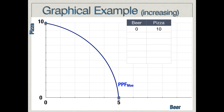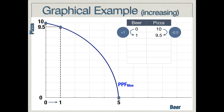Now to contrast this, let's take a look at a PPF that exhibits increasing opportunity cost. In contrast to the previous PPF — a straight line connecting 10 pizzas and zero beers to zero pizzas and five beers — we now have a PPF that has a curve to it. If we increase beer production by one unit and follow that up to the production possibilities frontier and across, we see that yields 9.5 pizzas. So increasing beer production by one unit has an opportunity cost of just 0.5 pizzas.